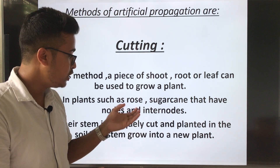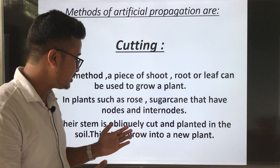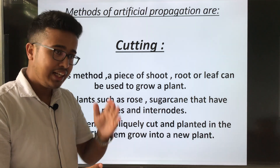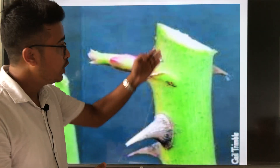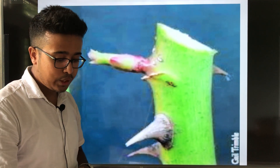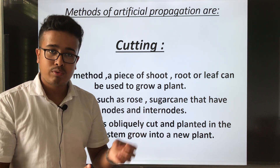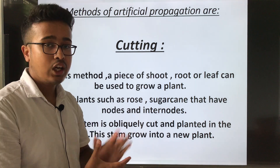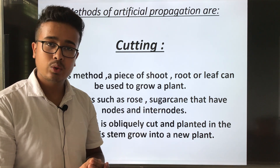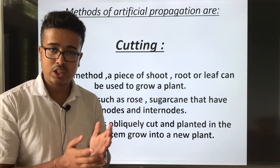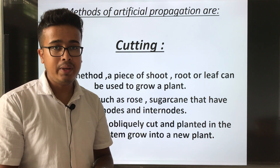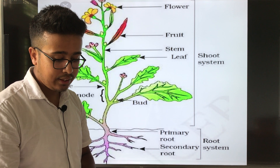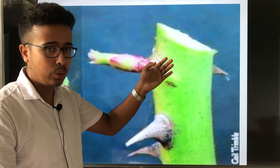Their stem is obliquely — that means slightly — cut and planted in the soil, and this stem grows into a new plant. You may have seen this at home: the rose plant stem is cut obliquely and planted in the soil, and a new rose plant will arise from it. So cutting means: cut either the shoot, root, or leaf, plant it in soil, and after some days a new plant will grow from that planted stem, shoot, or root.